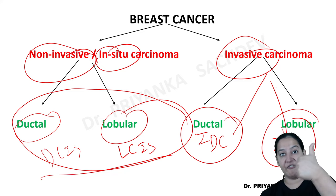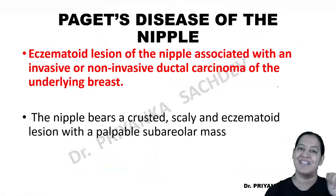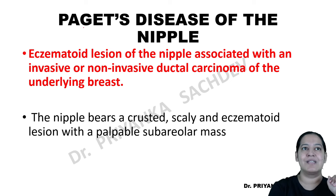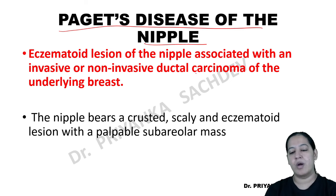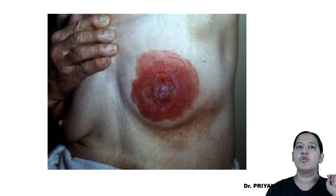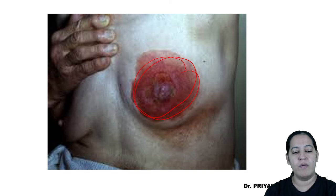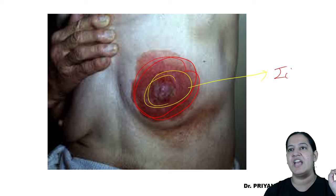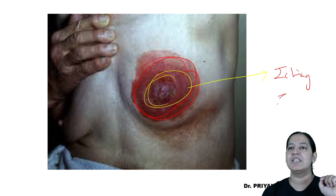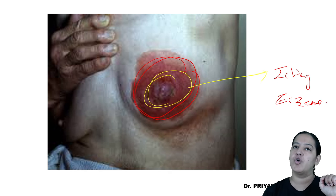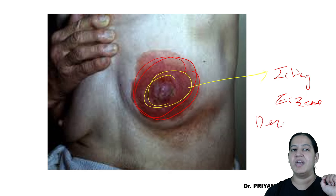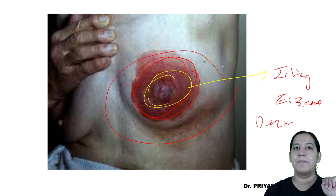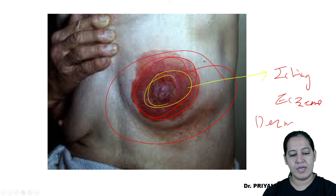Apart from these four, the fifth tumor in the breast is Paget disease of the nipple — it is a malignancy. The patient will come with an eczematoid lesion over the nipple, feeling itching. She may think it is a dermatological condition. She doesn't know she is having malignancy because inside the breast she cannot feel any mass.